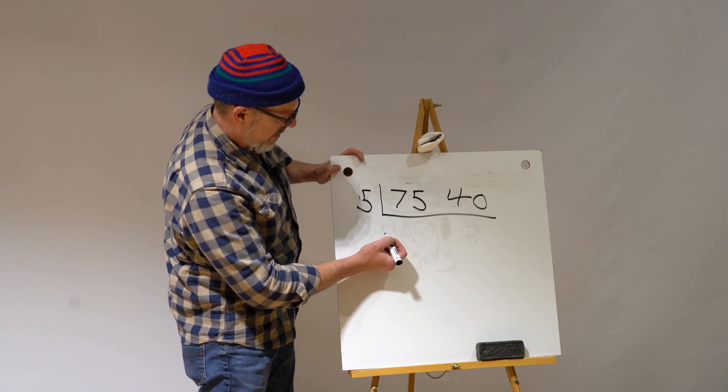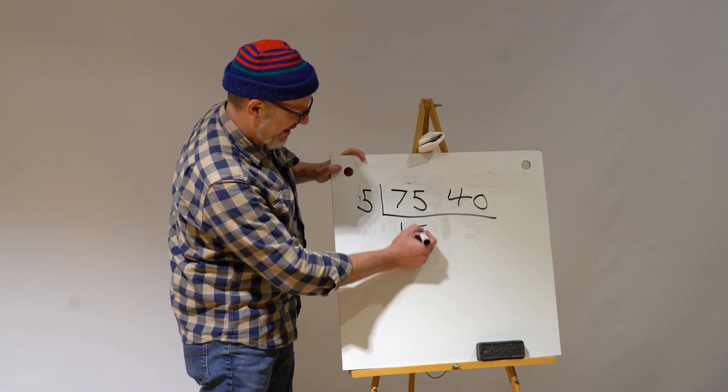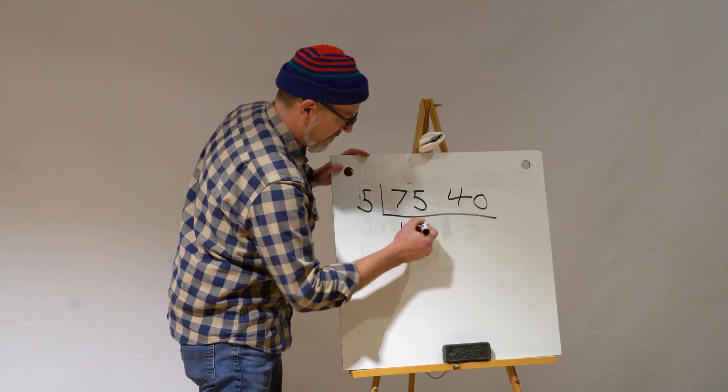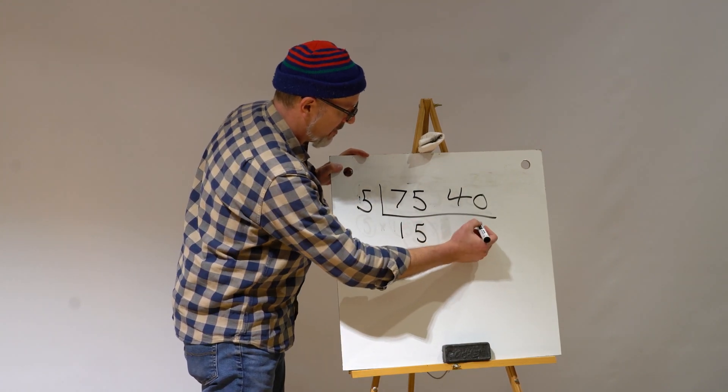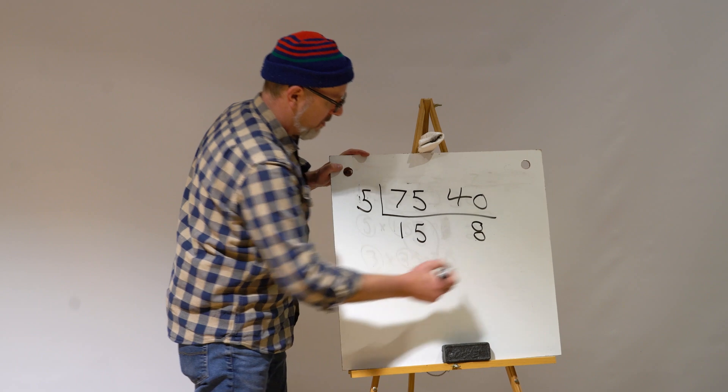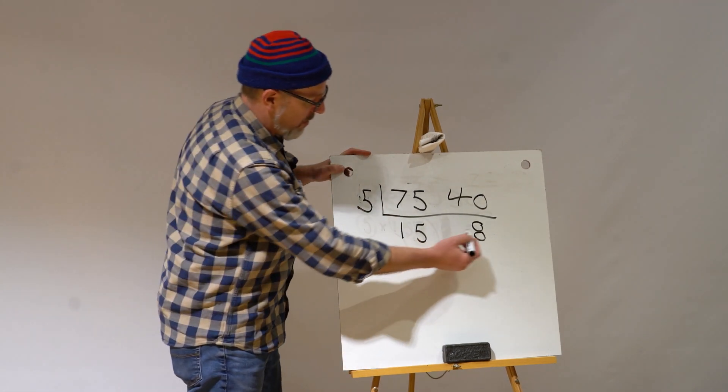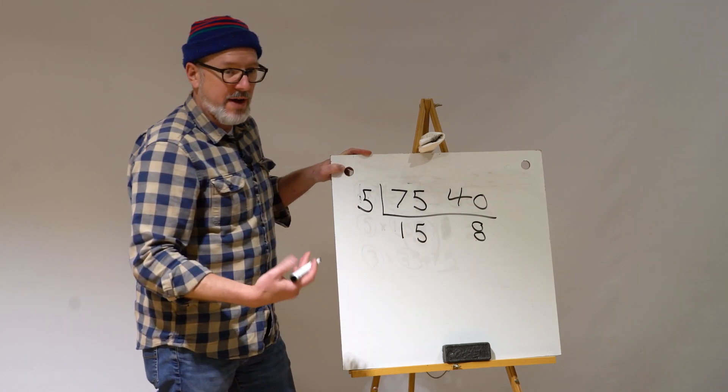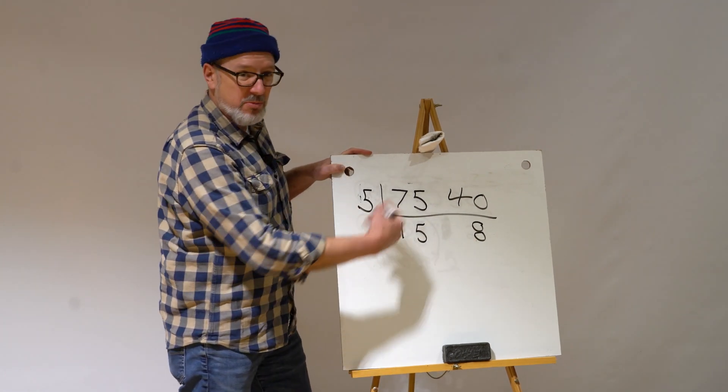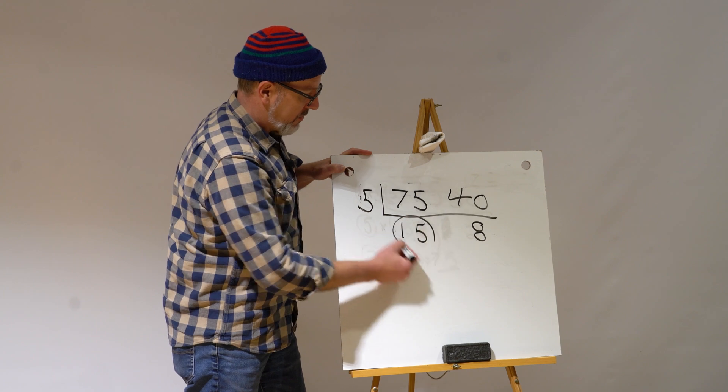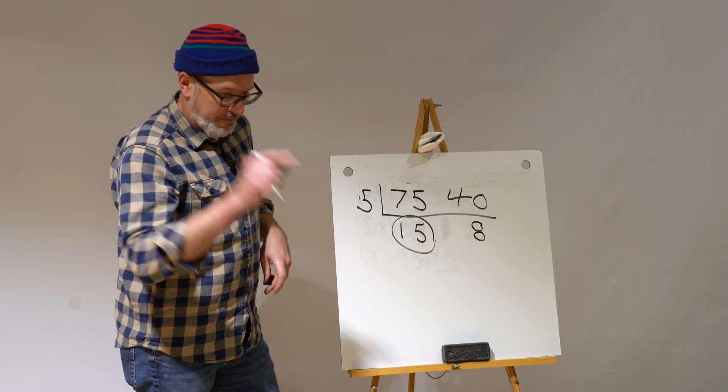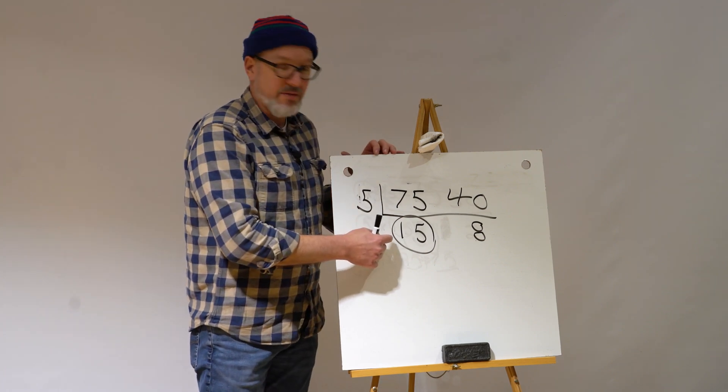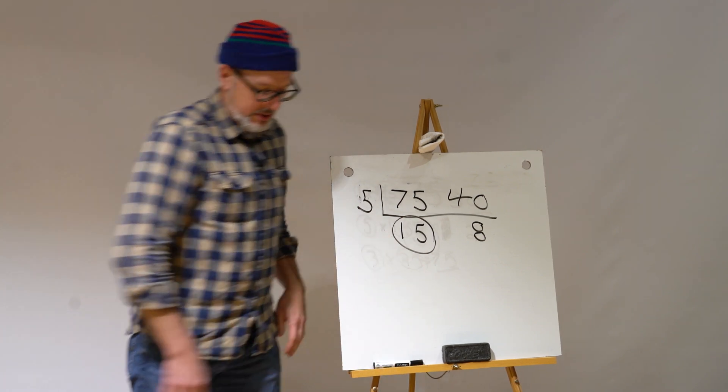5 goes into 75 fifteen times, and 5 goes into 40 eight times. Now if I look at the 15 and 8, I can see there's no other factors that they share. That's how I know I'm done. So if I use the 40 wheel with the 75 ring, I should get a hypotrochoid that has 15 points. Let's check it out.